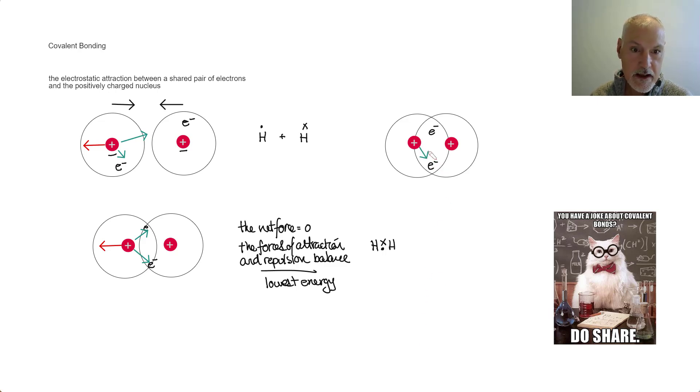And there would still be attractive forces for the electrons. But because the positively charged nuclei are so close together, there'd be a tremendous force of repulsion. And that would result in it moving back to the intermediate state where they balance.